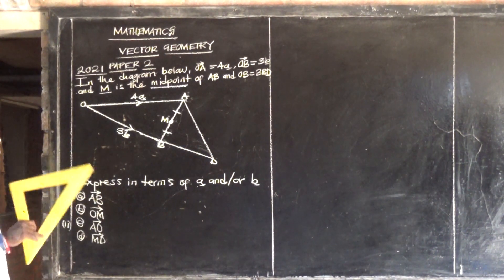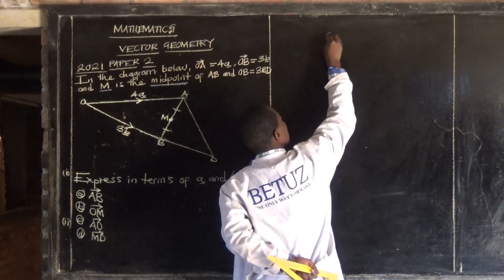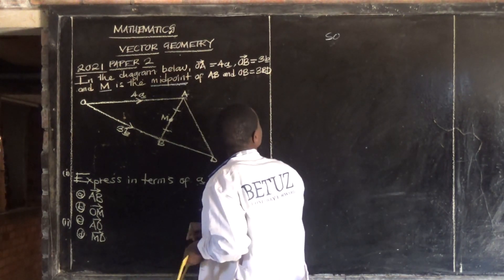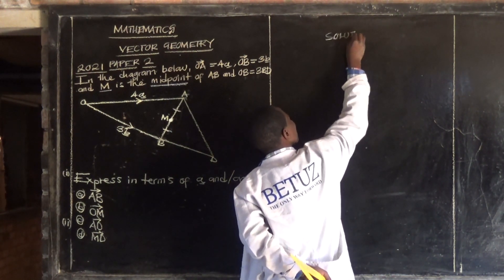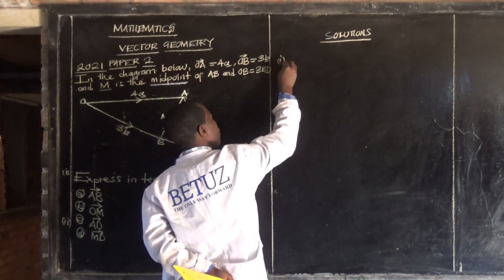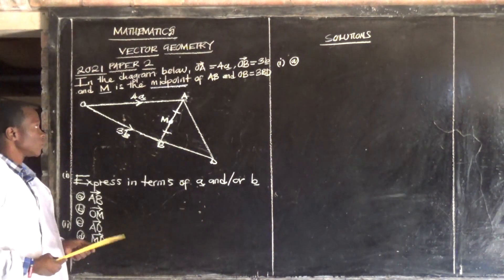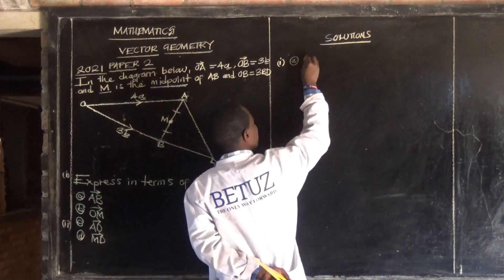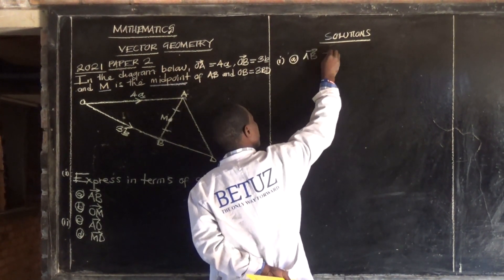The first one is AB. We are going to express AB. How do we find vector AB? So our solutions — Roman numeral 1 — we want vector AB.